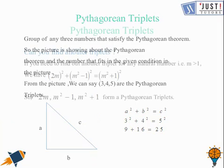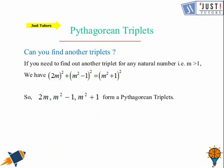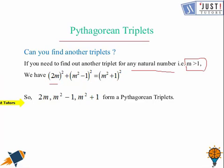Now let us move further and learn about Pythagorean triplets. To find a Pythagorean triplet, here is the formula. For any natural number m greater than 1, the values 2m, m squared minus 1, and m squared plus 1 form Pythagorean triplets, because they satisfy the Pythagorean theorem. With the help of an example you will have a good idea about it.